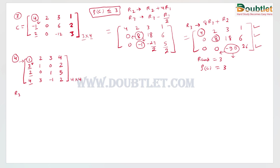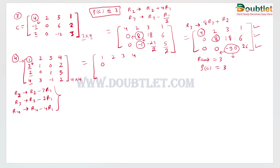We apply the operations: R2 minus three R1, R3 minus two R1, and R4 minus four R1. After applying these, the matrix becomes: row one is 1, 2, 3, 4; row two is 0, -5, -9, -10; row three is 0, -4, -5, -3; row four is 0, -5, -13, -14.